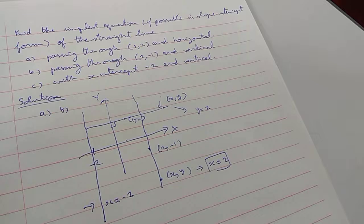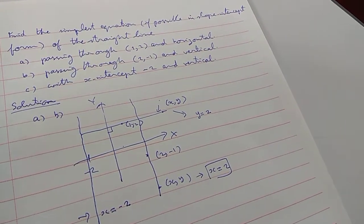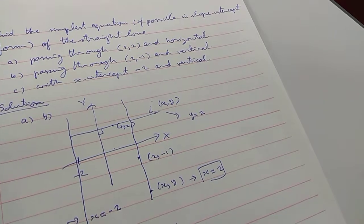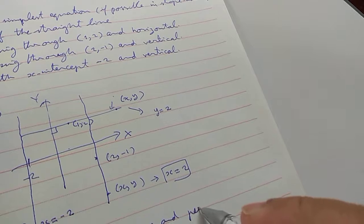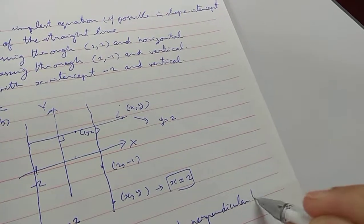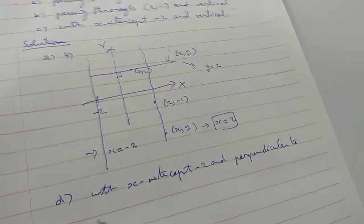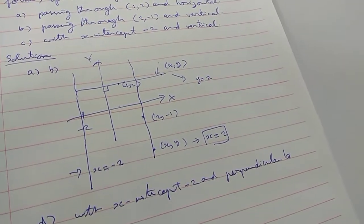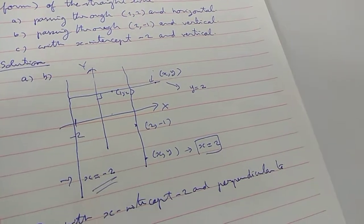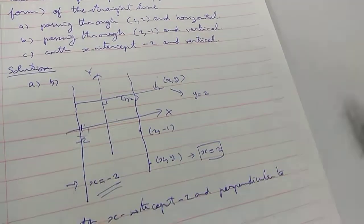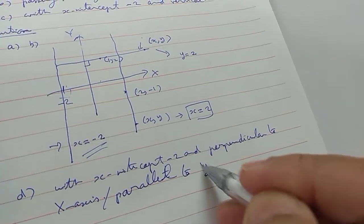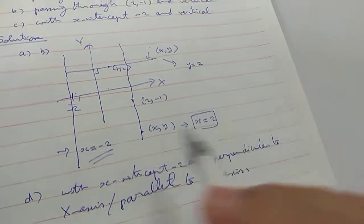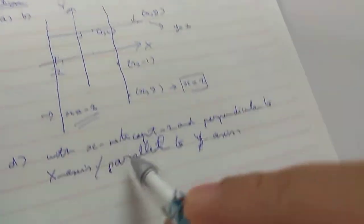For d, with x-intercept negative 2 and perpendicular to x-intercept. You can see like this. Or you can write parallel to y-intercept. So you can describe this straight line like this also.